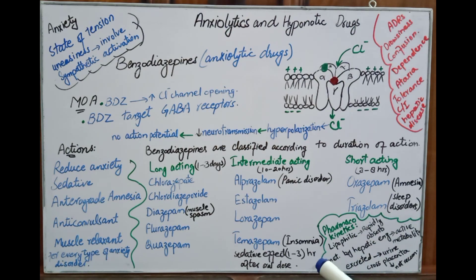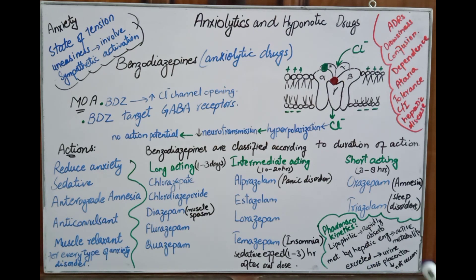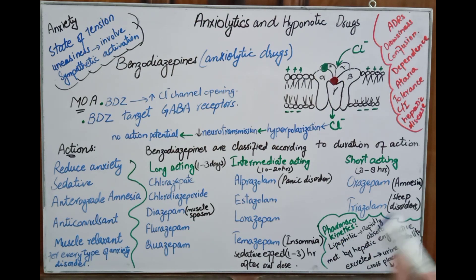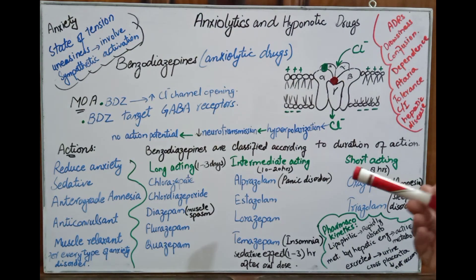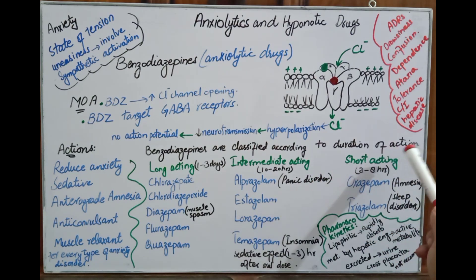Muscle relaxation: Diazepam is the drug that has muscle relaxation effects on skeletal muscles and spasticity. Benzodiazepines are used for every type of anxiety disorder, including generalized anxiety disorder, social anxiety disorder, performance anxiety disorder, post-traumatic stress disorder, and obsessive-compulsive disorder — which involves repeated unwanted thoughts and sensations. Benzodiazepines are the best choice for all kinds of anxiety disorders.